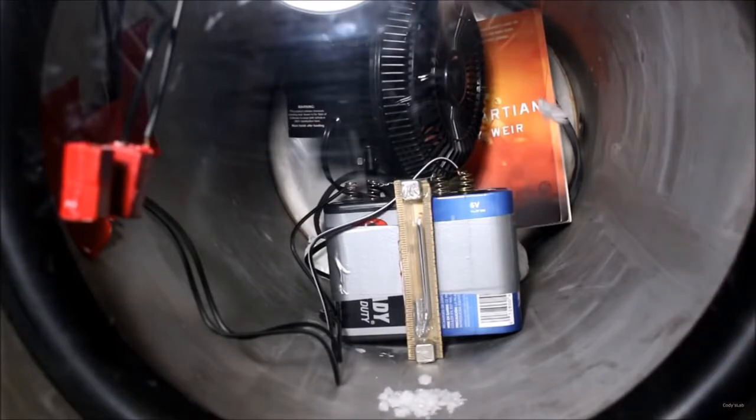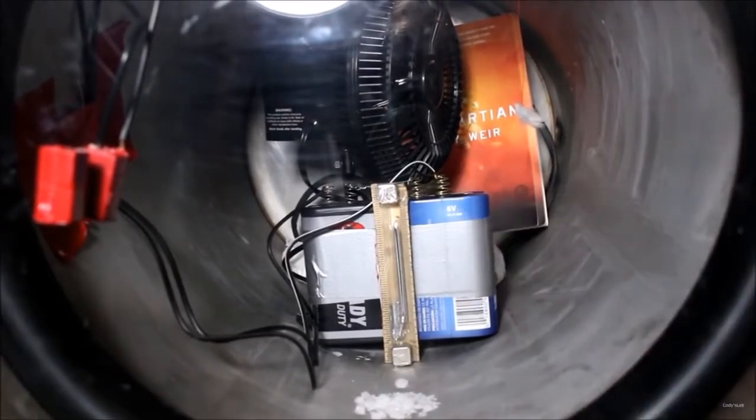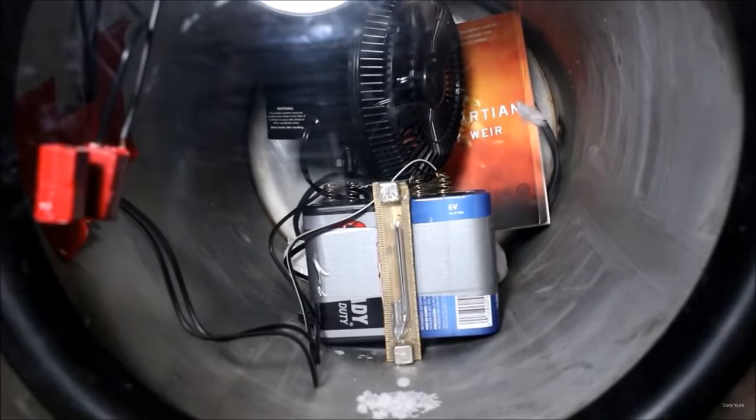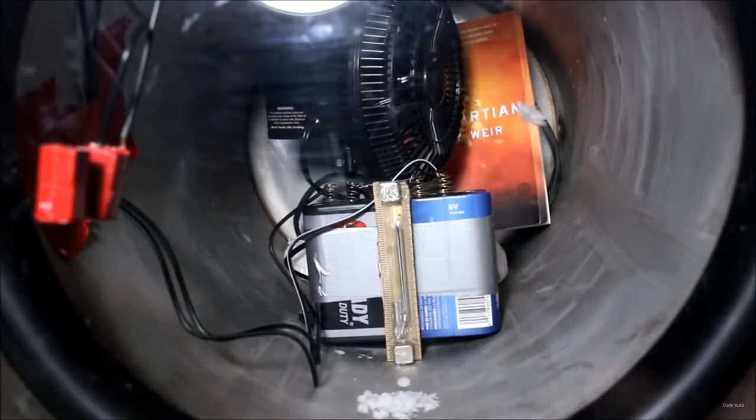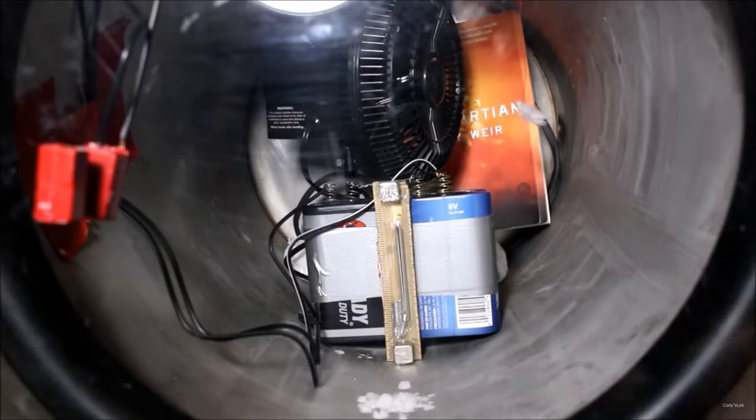Now we're going to suck out all of the air, or at least most of it, down to about between 4 to 6 millimeters of mercury, which is of course the pressure on the surface of Mars. So let's plug in the vacuum pump. There we go. Give this a little while to suck down.